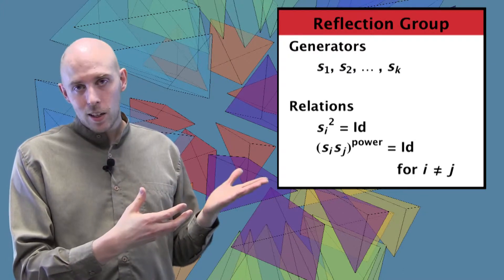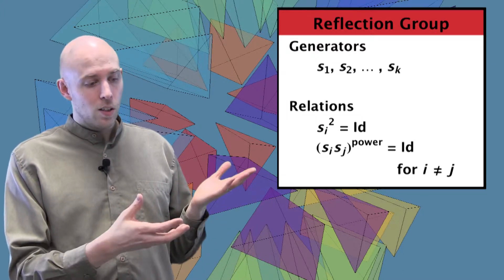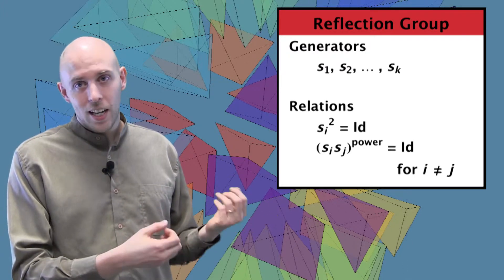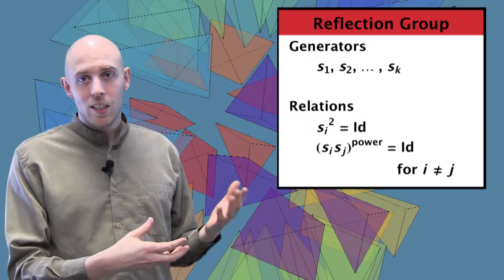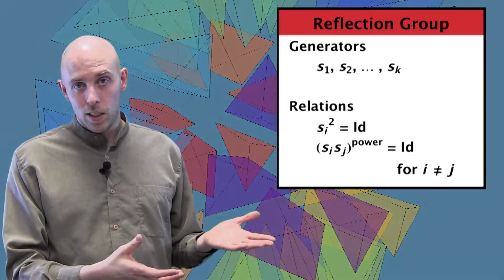And for each of these generators, we'll have the relations: Si² equals the identity, and (Si Sj) to some power equals the identity when i is not equal to j.